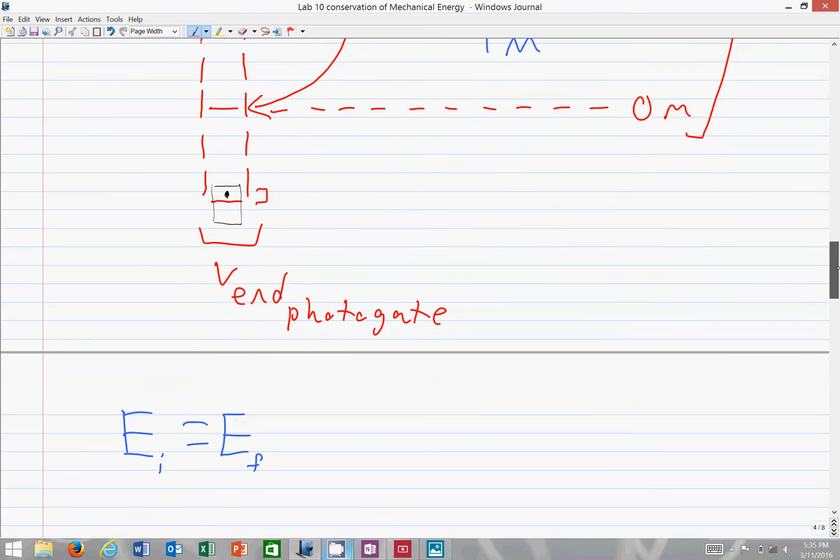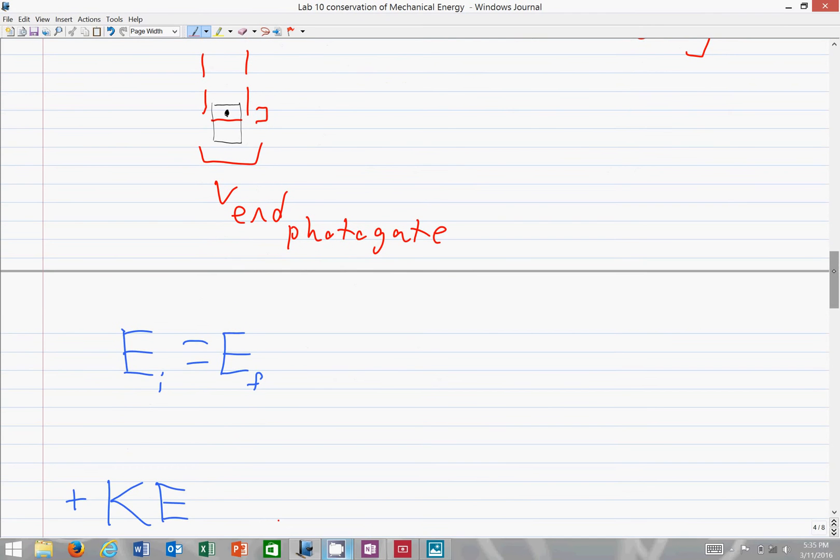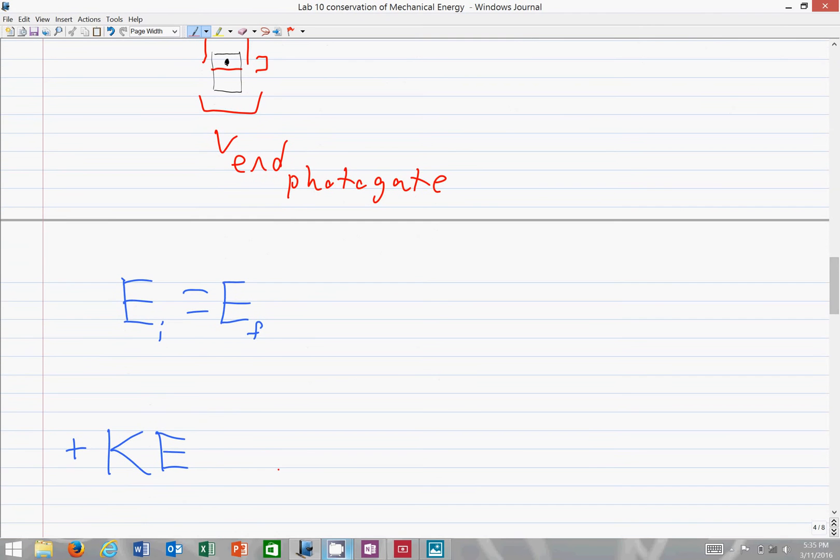And when we move on to our energy statement, it is slightly different since the meter stick is not moving as a whole, but simply rotating around an axis. We are going to be adding the angular kinetic energy to both sides of this statement.